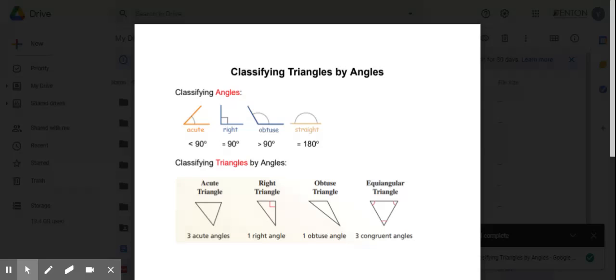Second type, right triangle. One angle is a 90 degree angle.